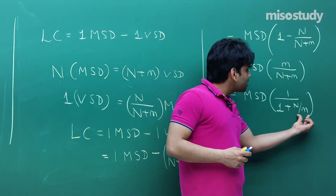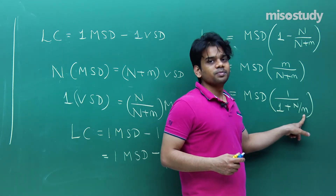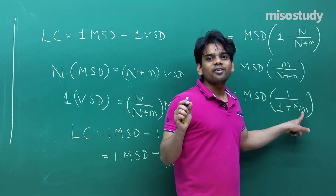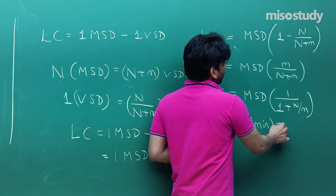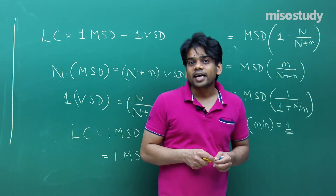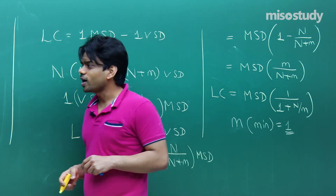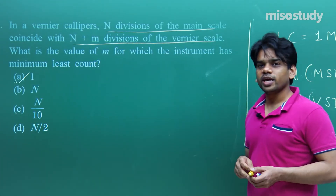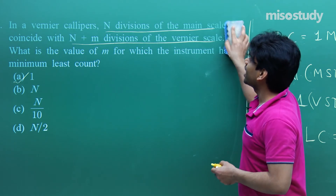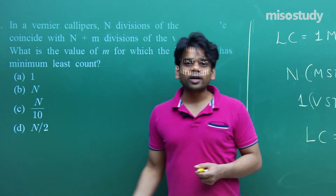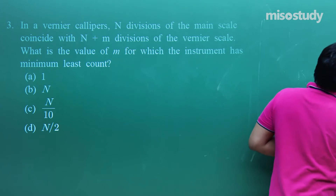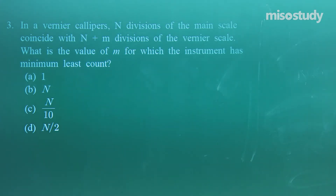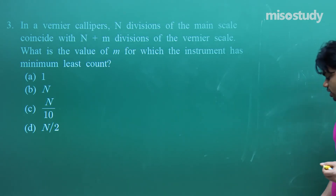The denominator will be maximum when M is minimum. Since M is an integer, its minimum value is 1. So for having the minimum least count, the value of M should equal 1. Option A matches — the answer is M = 1. I hope you remember the concept of vernier caliper from the first chapter.